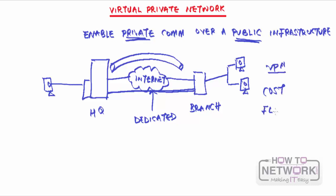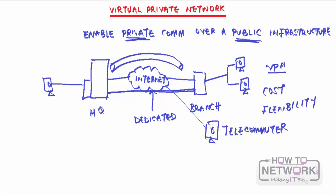Another reason is flexibility. Remember in this instance we used a branch and an HQ. But what if it's a HQ and a single user — people who work from home, like a telecommuter? This telecommuter can be anywhere at any time, and you can't have a dedicated link connecting to that user's PC. The user has to move around different parts of the country and is not stable. So you need a VPN for that kind of thing — it allows for flexibility and cost savings.